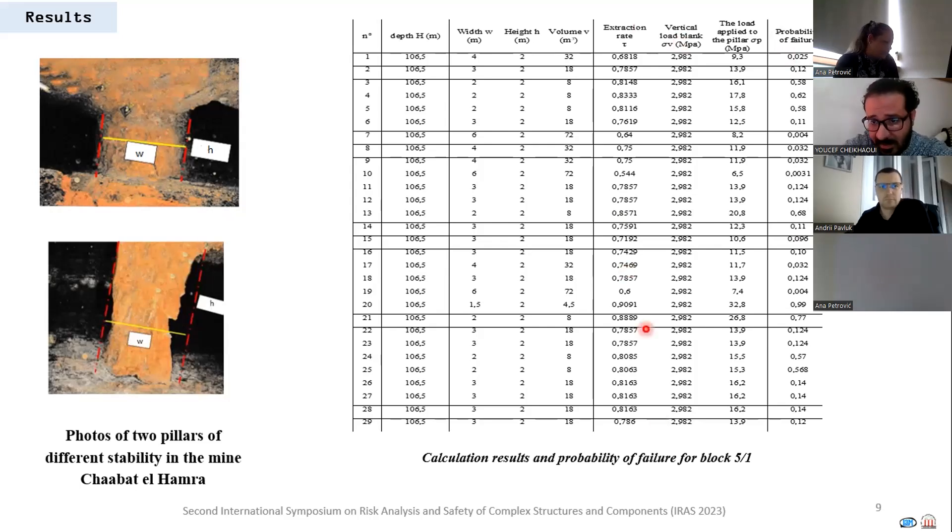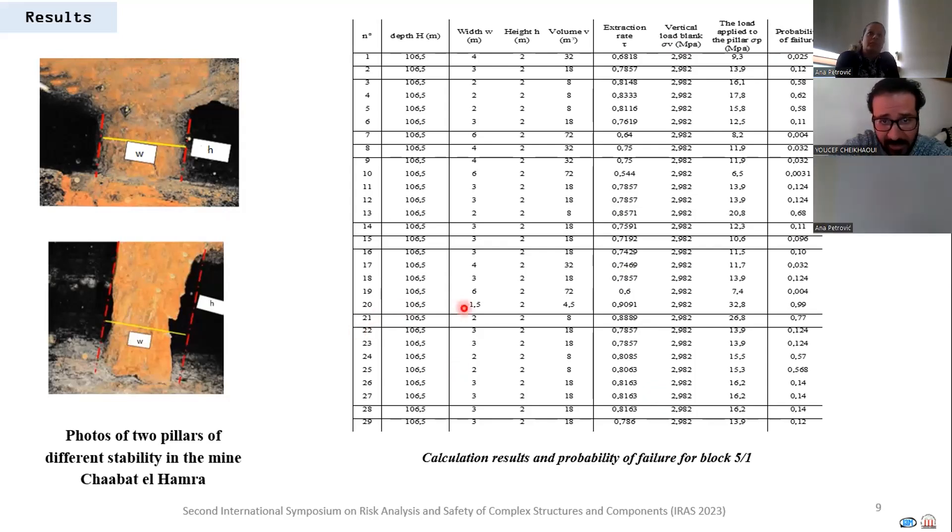For example, pillar number 20 is a slender pillar with an extraction ratio of 90 percent and has a probability of failure of 0.9829.